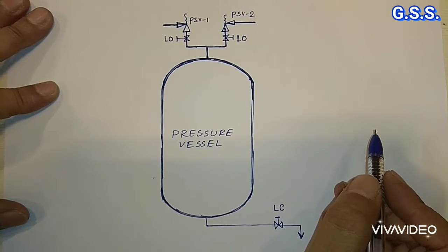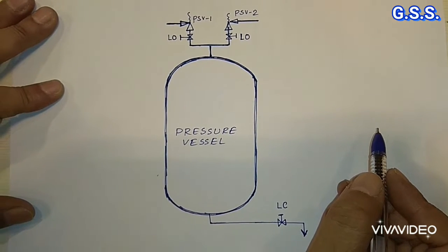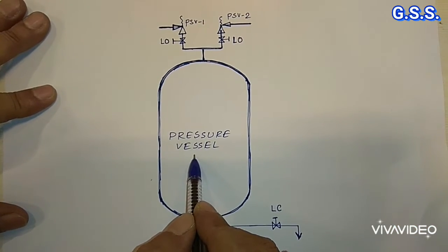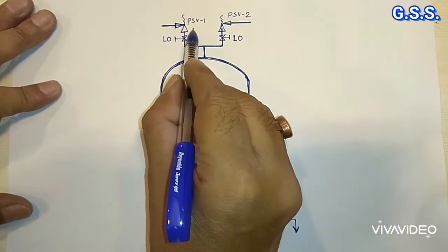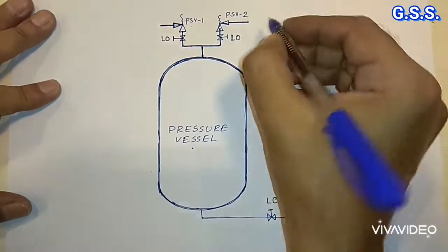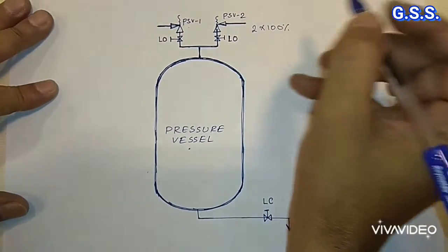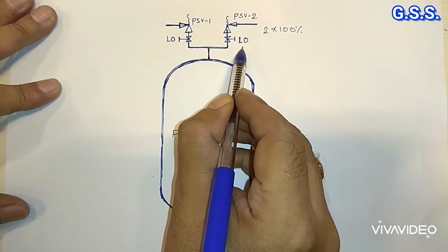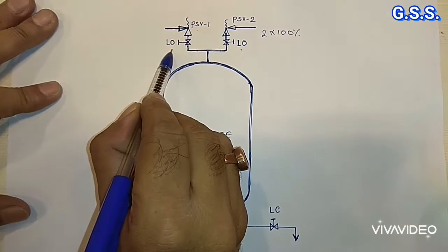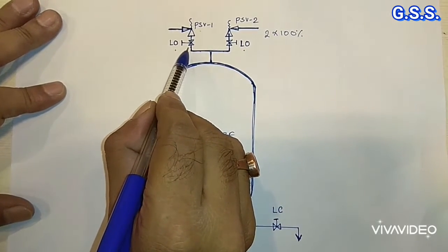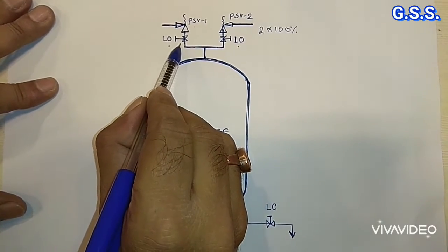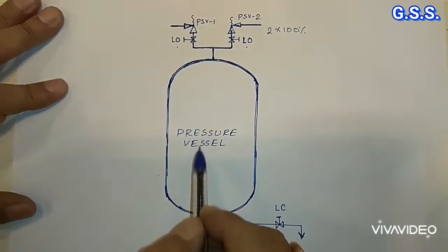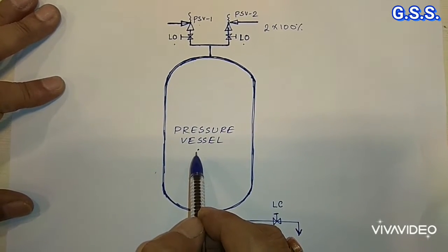Now let us see why locking devices are required for valves. Suppose this is one pressure vessel and every pressure vessel should have two safety valves — 2 into 100% safety valves. The inlet isolation valve of the safety valve should be locked open type, so that nobody will be able to close the isolation valve. If anybody closes the isolation valve, the safety valve will not work and it will be a safety issue.